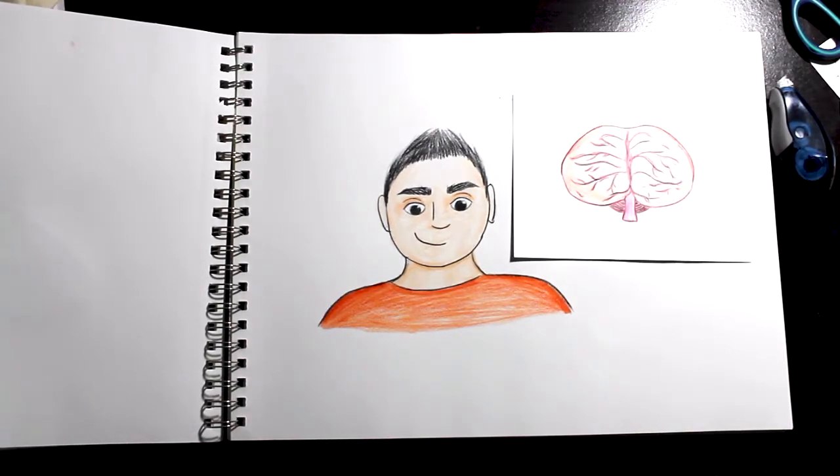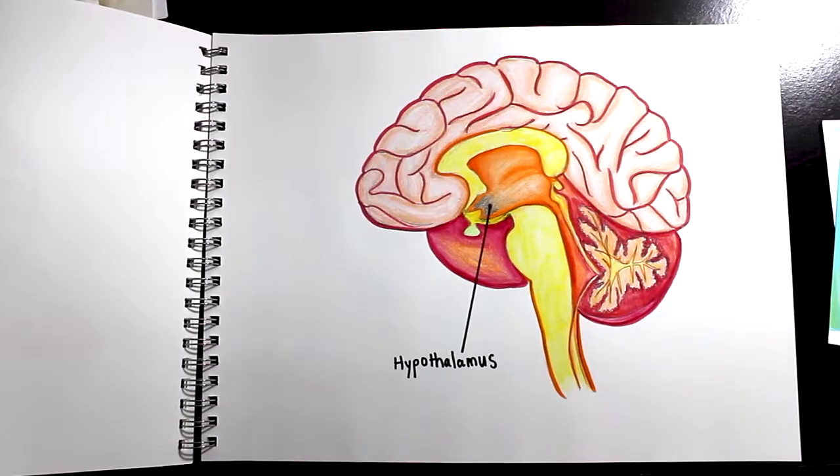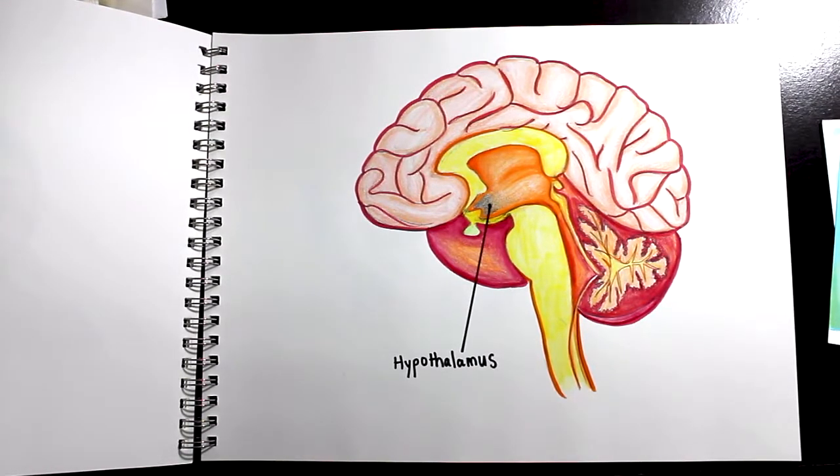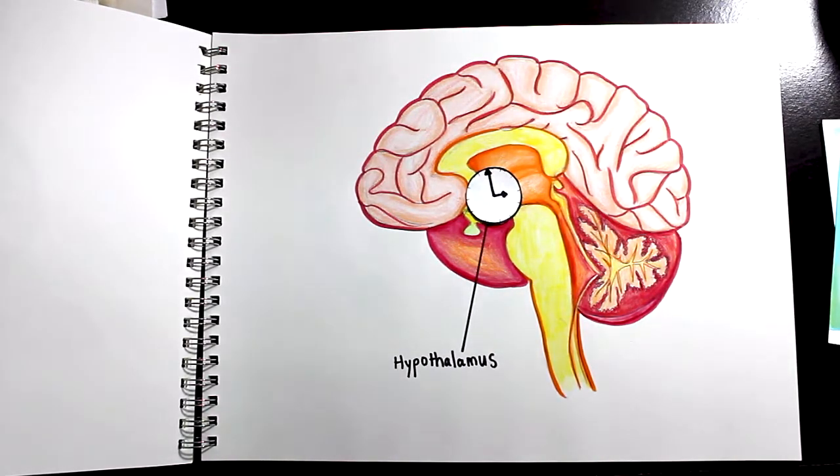The reason why it might be harder to fall asleep is because your body's internal clock can become a little confused. Your body's natural clock is found inside the brain, in a part of the brain called the hypothalamus.